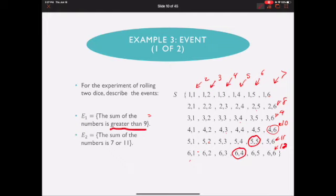So my E1 is going to be everything that adds up to 10, everything that adds up to 11, and everything that adds up to 12. So I have my E1 is the point six, four, five, five, four, six, five, and six, six. So there's six different elements in E1.